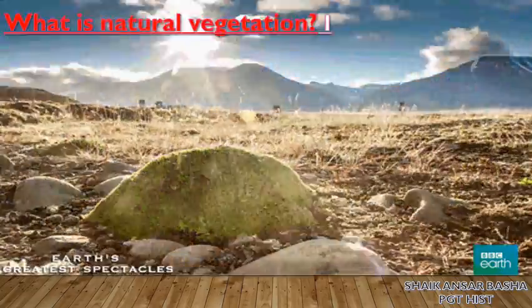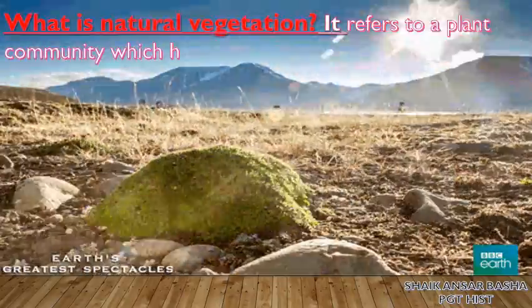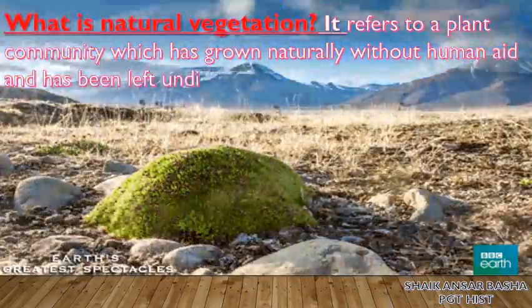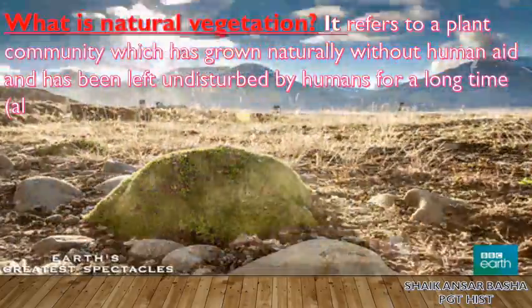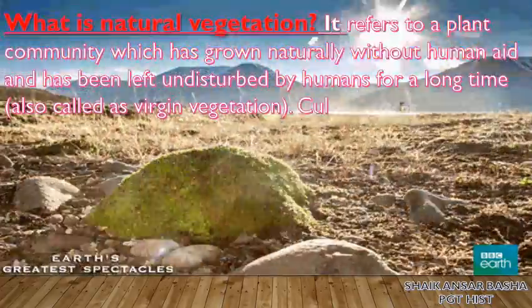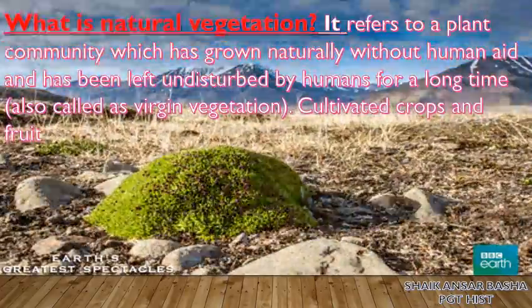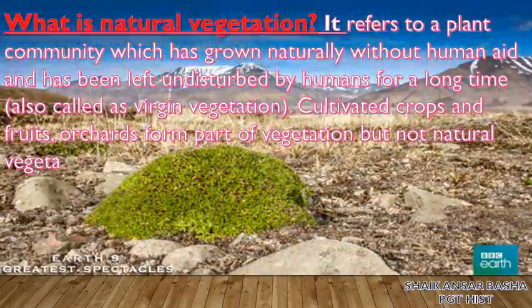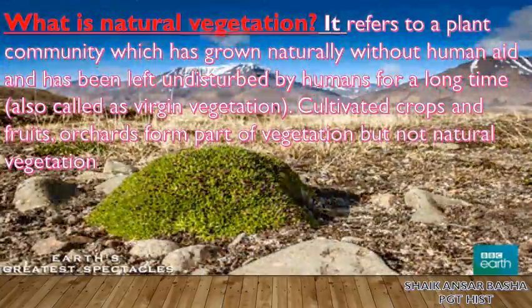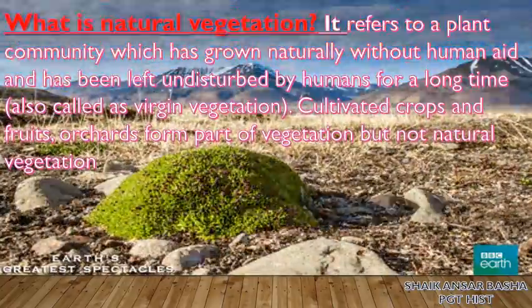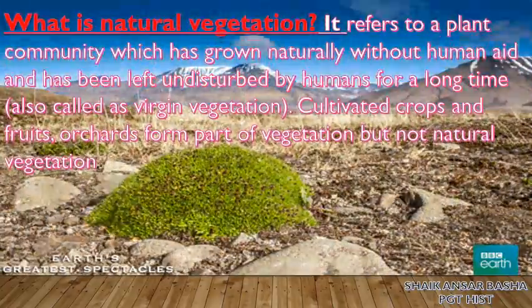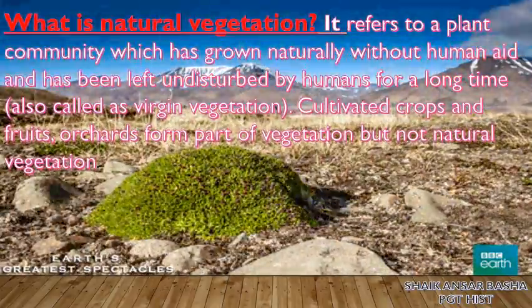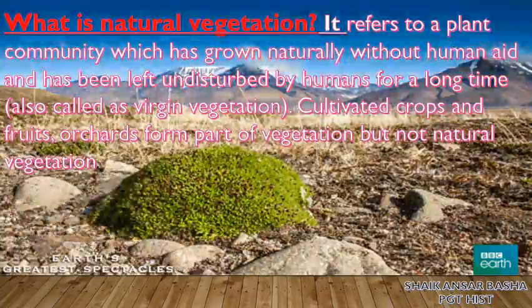What is natural vegetation? It refers to a total plant community, right from grasslands, minute grass to the mighty banyan tree, which has grown naturally without human aid and has been left undisturbed by humans for a long time. When human beings are not disturbing it for a long time, that is called virgin vegetation. Cultivated crops, fruits, and orchards also include in the natural vegetation along with forests and grasslands.